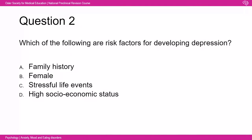Now we'll discuss mood disorders. Socrative question two: which of the following are risk factors for developing depression — there is more than one. The answers are family history, being female, and stressful life events. High socioeconomic status is not associated with depression. Having a family history of depression, being female, and experiencing stressful life events all increase your risk of developing depression.